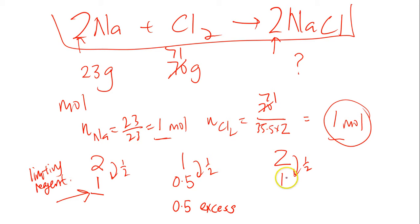Alright, so if I have 1 mole of NaCl as a result of 1 mole of sodium, the mass of NaCl would be 1 times 23 plus 35.5 which is 58.5 grams.